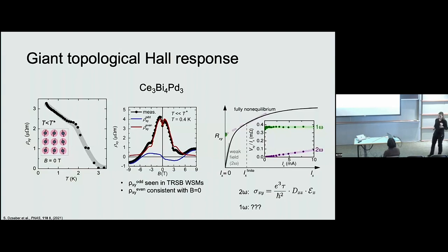And so the thought here for the origin of this giant Hall response, why we think it's topological, is that this is a candidate Weyl Kondo semi-metal system. So we think that there's good evidence that there are Weyl nodes that are fixed to the Fermi energy by a Kondo resonance.